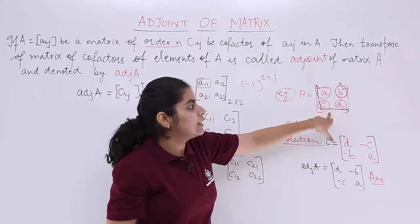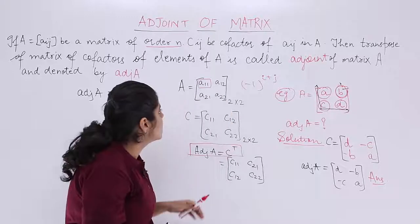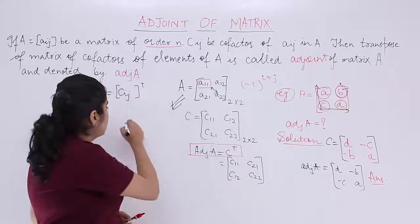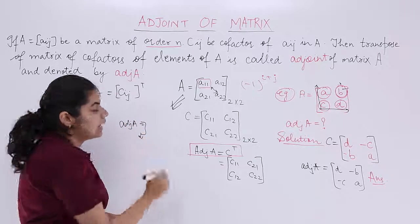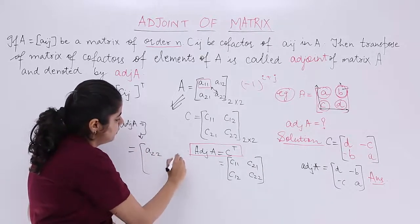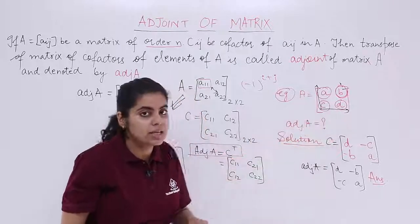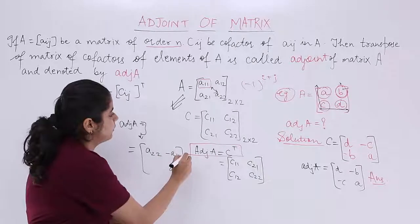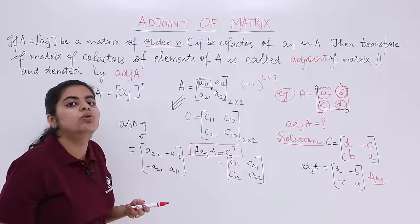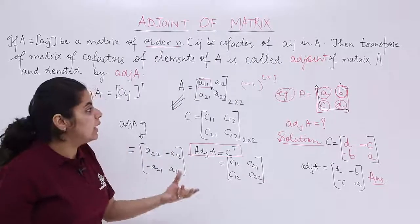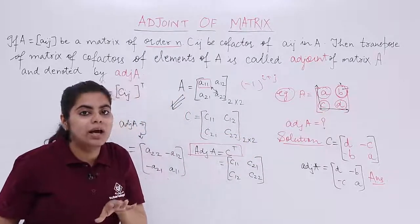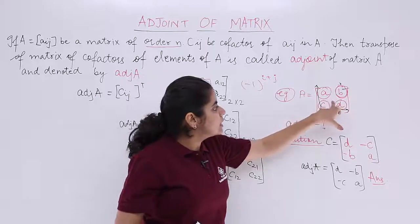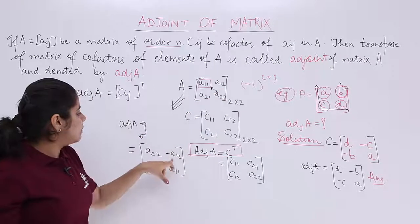The second step: the off-diagonal elements B and C are not interchanged — only their signs are changed. If B and C are positive, make them minus B and minus C. So for a 2x2 matrix, the trick is: interchange A11 and A22, then make A12 and A21 negative. That is the adjoint for a 2x2 matrix directly.